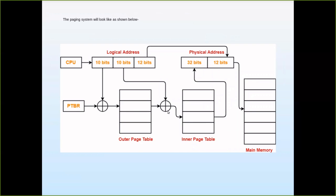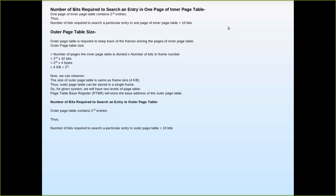Now, to access an address, the page table base register holds the base address of the outer page table. The CPU generates the logical address. The inner page table entries consist of 32-bit frame numbers, because the physical memory is 16TB = 2^44, where 32 bits identify the frame and 12 bits are the page offset. We will now see this with a detailed example.